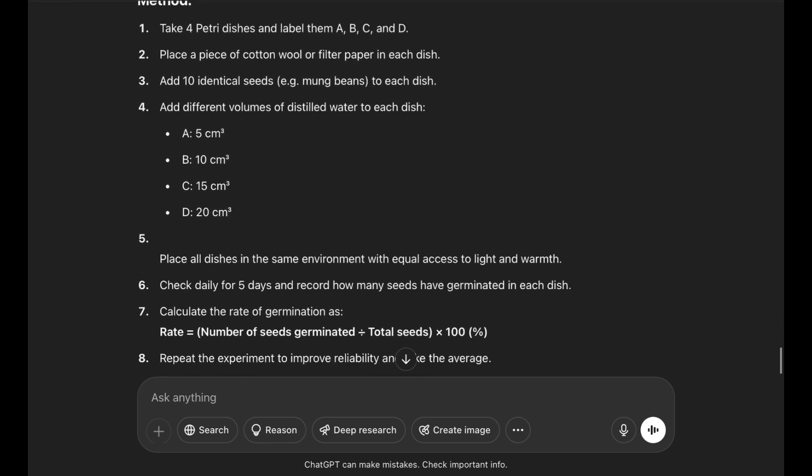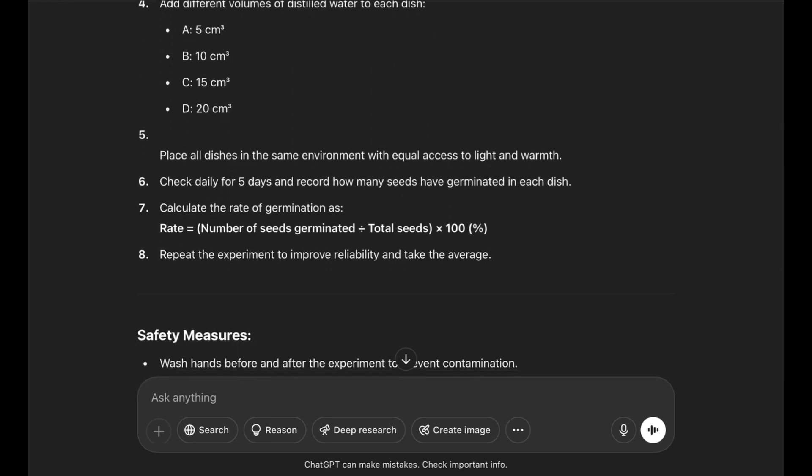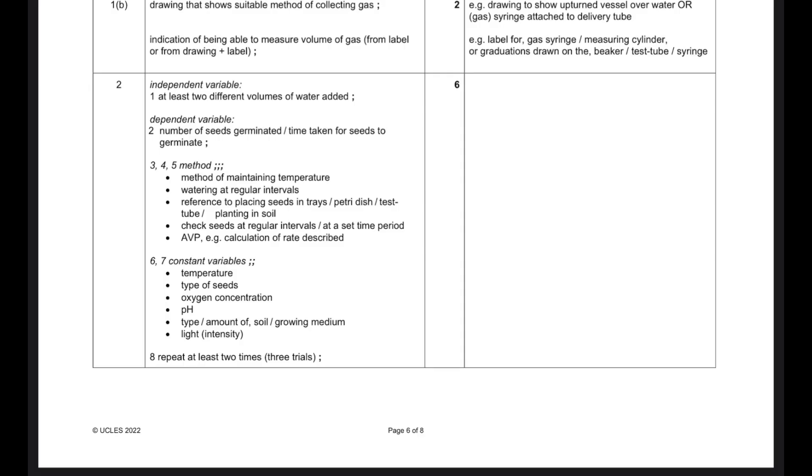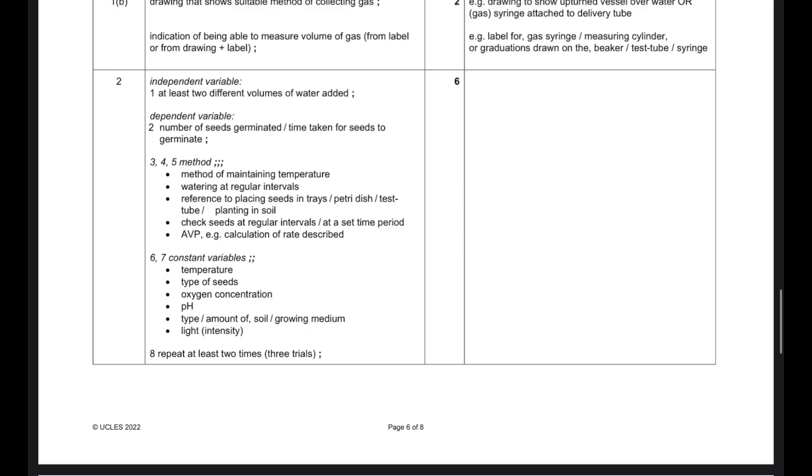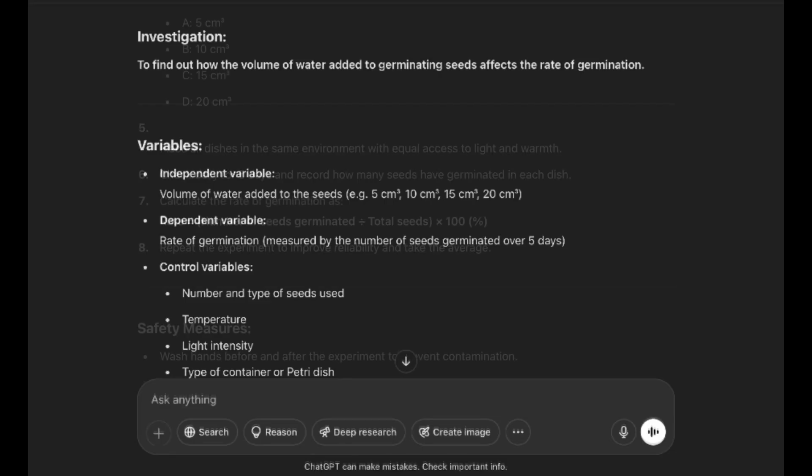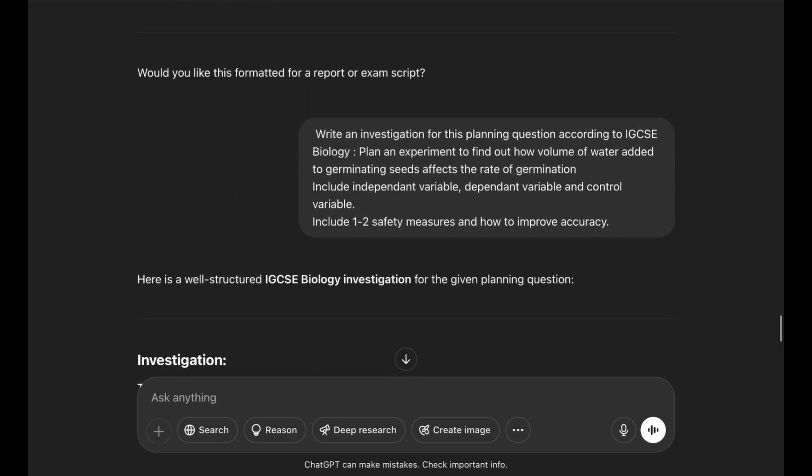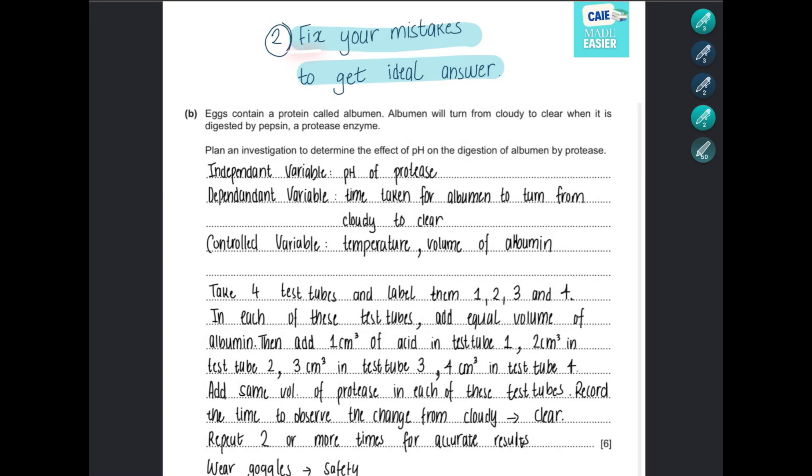One thing to notice here in number eight: they said repeat the experiment to improve reliability and take the average. Remember, in the marking scheme here they said repeat at least two times—this is for IGCSE. Other than that, it's quite accurate and I hope it's useful for you.